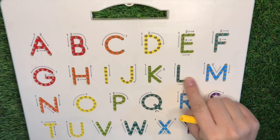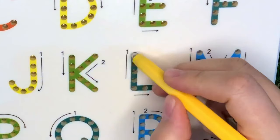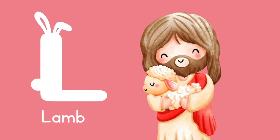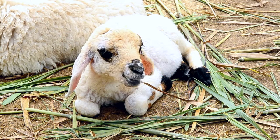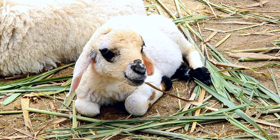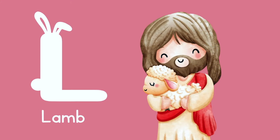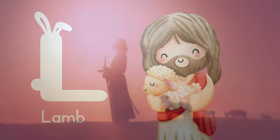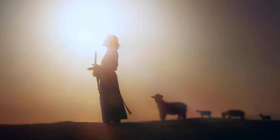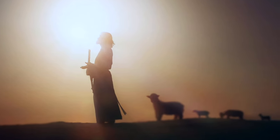L is for this soft animal. They're cute, fluffy, and they're special because they remind us of someone very important — Jesus. So L is for lamb! A long time ago, people used to bring baby lambs to the temple as a special gift to God.